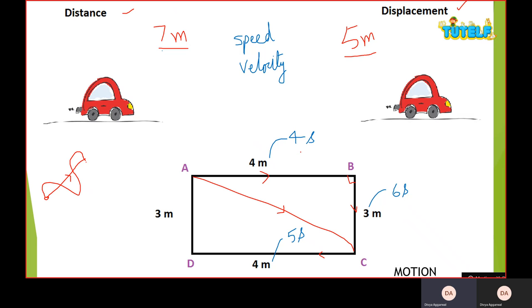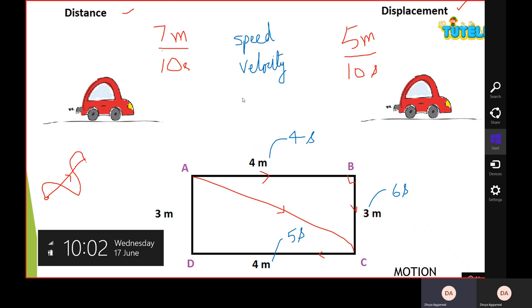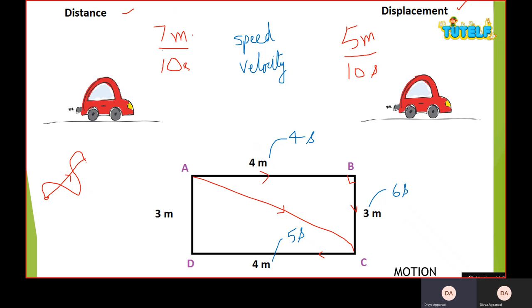Now we will see the total time taken from A to C: 6 plus 4 is 10 seconds. When I divide the distance by time, I get speed. And when I divide the displacement by time, I get velocity.